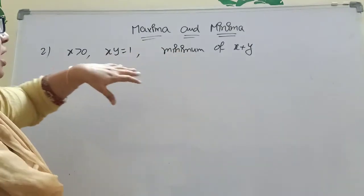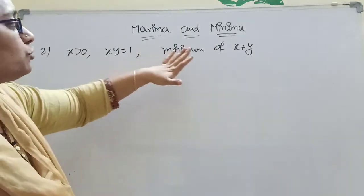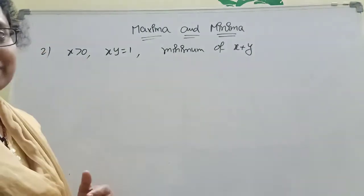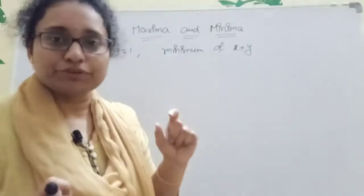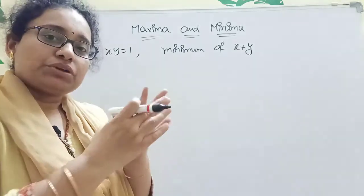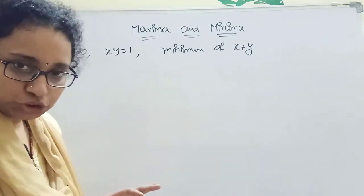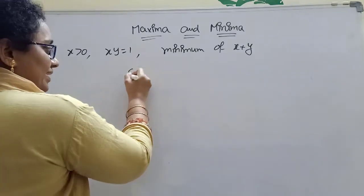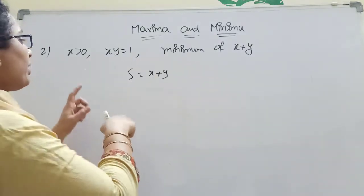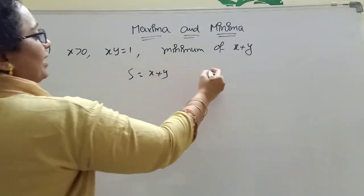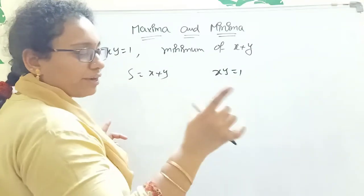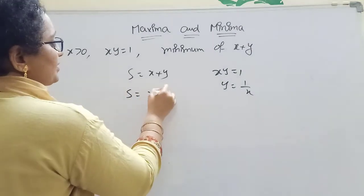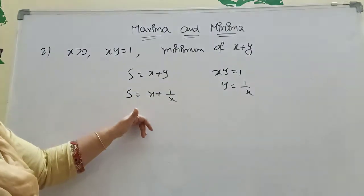Let me explain the next problem. In Maximum Minima, suppose X > 0 and XY = 1 is given. Then you should find the minimum of X + Y. For any equation given, first find the derivative, then the second derivative. Set first derivative equal to 0, then check if the second derivative is greater than or less than 0 to determine maximum or minimum. Let S = X + Y. Since XY = 1, we get Y = 1/X. So S = X + 1/X.